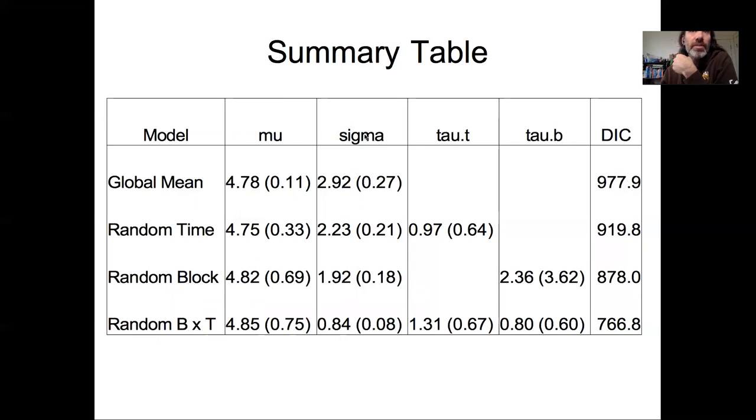At the same time, our estimate of sigma—in this case it's been converted into standard deviation, so this is our residual error—our estimate of the residual error gets more and more confident as we add complexity to the model. With both the time and block random effects, the residual uncertainty is a good bit lower, maybe close to a quarter what it originally was, and we've partitioned that uncertainty out. First in the random time effect we partitioned it into a residual and a time variability. In the block effect we partitioned it into a residual and block variability. In the final model we partitioned that out into a residual error, a temporal variability, and a block variability.